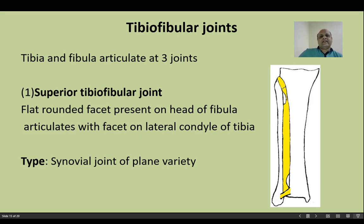There are three joints between the tibia and fibula. The superior tibiofibular joint is formed where a flat, rounded facet on the head of fibula articulates with a facet on the lateral condyle of tibia. It is a synovial joint of plane variety — this should be remembered.